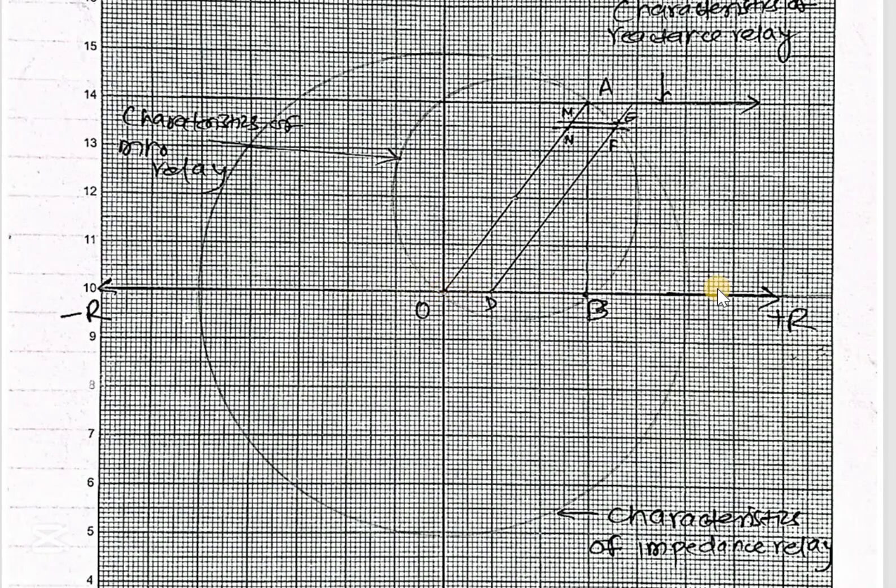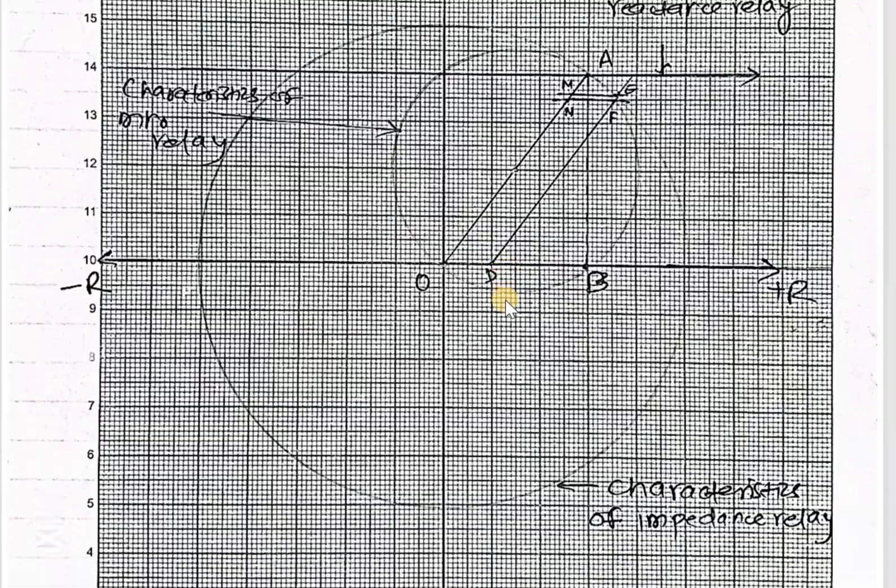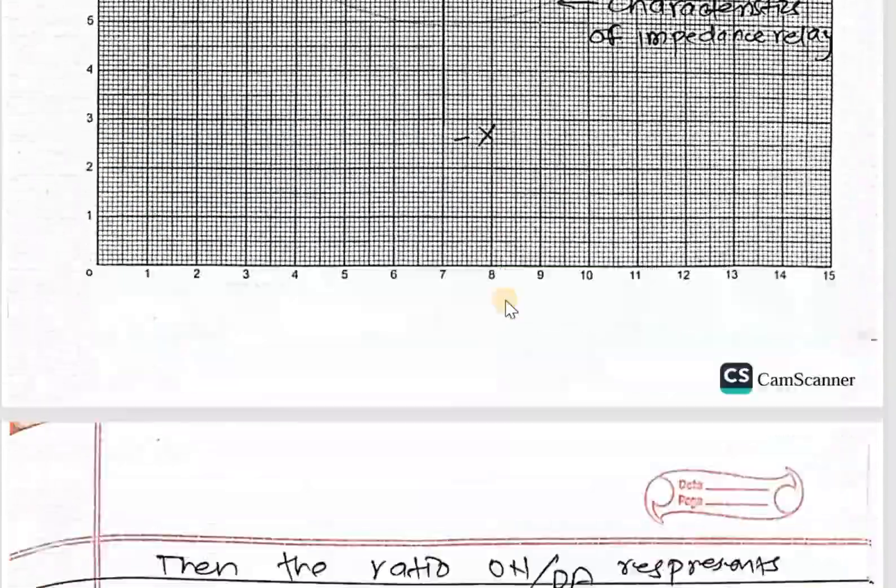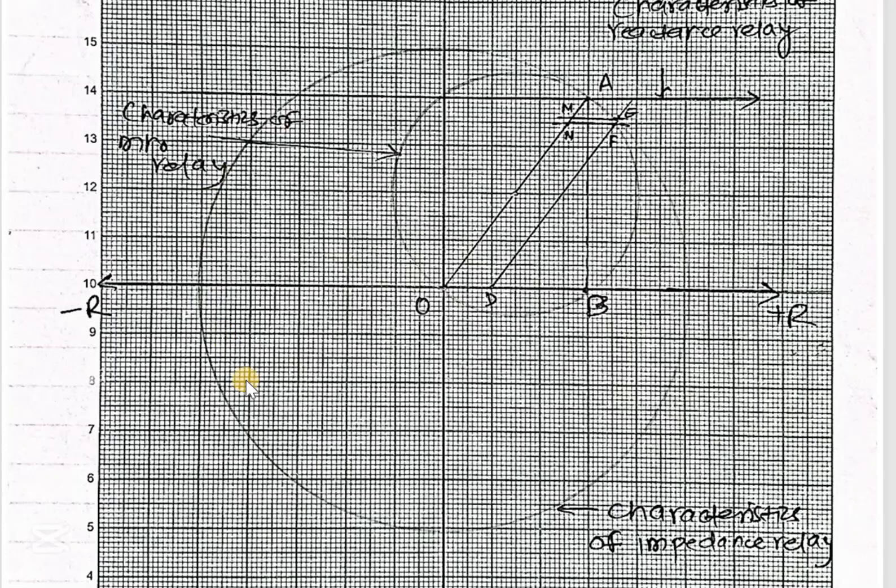After drawing this circle, this is the impedance relay characteristics—the bigger circle is the impedance characteristics of impedance relay. Then draw this line O to A and take half of this, and then again draw the circle, this is a small circle.